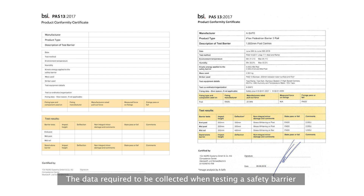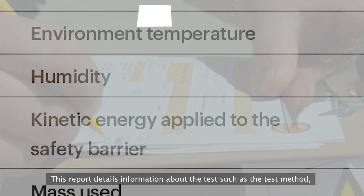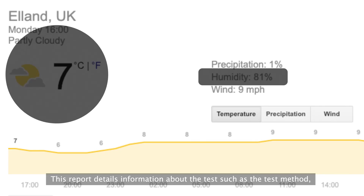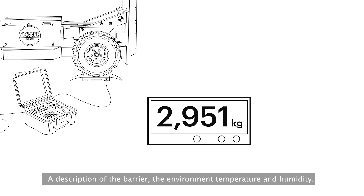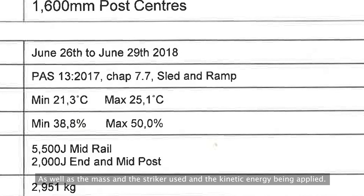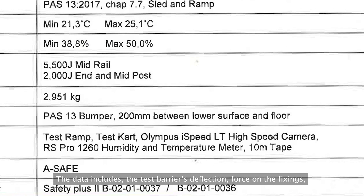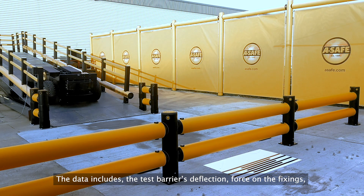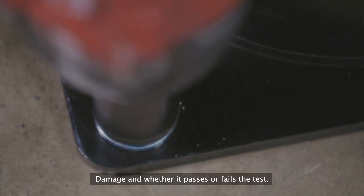The data required to be collected when testing a safety barrier must be compiled into a standardized report. This report details information about the test, such as the test method, a description of the barrier, the environment temperature and humidity, as well as the mass and the striker used and the kinetic energy being applied. The data includes the test barrier's deflection, force on the fixings, damage, and whether it passes or fails the test.